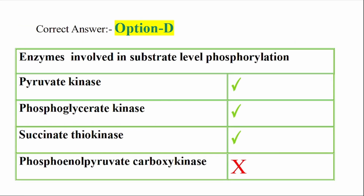Enzymes involved in substrate-level phosphorylation are: Pyruvate kinase, Phosphoglycerate kinase, and Succinate diokinase. The enzyme that is NOT involved in substrate-level phosphorylation is Phosphoenol pyruvate carboxy kinase.